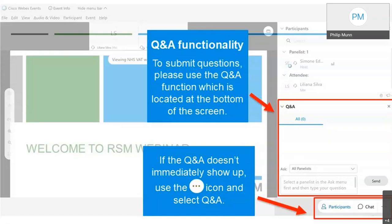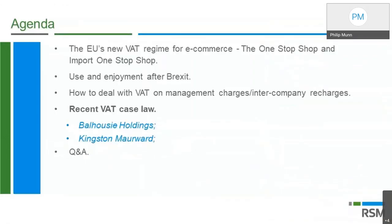With so many people attending I should note that we won't be able to take questions live during the presentation. However, we do want to make this presentation interactive, so I want to explain how to ask questions. If we have time we'll pick up your questions at the end. You can submit questions using the Q&A box on the right-hand side of the screen. If it doesn't immediately show up, click the three dots button at the bottom right and select Q&A.